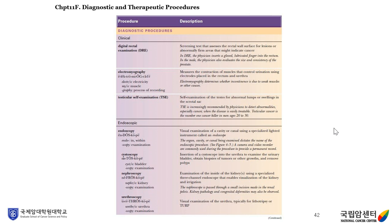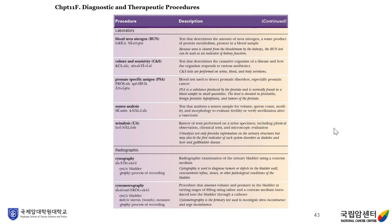Diagnostic and therapeutic procedures terminology: DRE (digital rectal examination) is a screening test that assesses the rectal wall surface for lesions or abnormally firm areas that might indicate cancer, such as prostate cancer. Electromyography measures the contraction of muscles. TSE is testicular self-examination. Endoscopy procedures include cystoscopy, nephroscopy, and urethroscopy. BUN (blood urea nitrogen) is a test that determines the amount of urea nitrogen, a waste product of protein metabolism, present in a blood sample. C&S means culture and sensitivity. PSA (prostate specific antigen) is a blood test used to detect prostatic disorders, especially prostatic cancer.